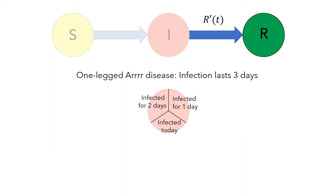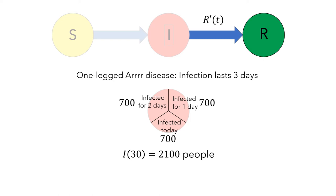Now this isn't necessarily true, but this simplification does something important for us. For example, let's suppose that 30 days after the start of the infection, there were 2,100 people who were infected. This would mean that 700 people were infected on day 30, 700 people had been infected for one day, and 700 people had been infected for two days. Since the infection only lasts three days, the 700 people who had already been infected for two days are going to be removed on the next day.